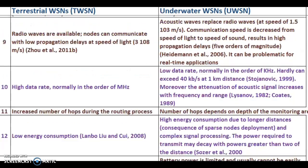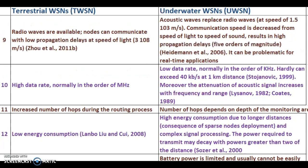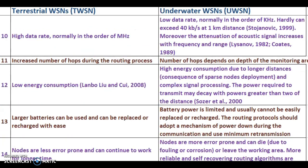Point 10: In TWSN, high data rates are normal, in the order of megahertz. In UWSN, low data rates are normal, in the order of kilohertz, and can hardly exceed 40 kb per second at 1 kilometer distance. Moreover, the attenuation of acoustic signals increases with frequency and range. Point 11: In TWSN, there is an increased number of hops during the routing process. In UWSN, the number of hops depends on the depth of the monitoring area.